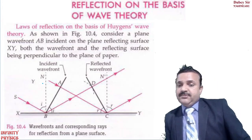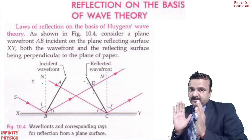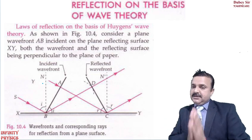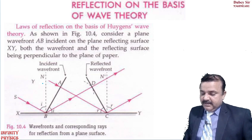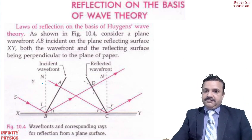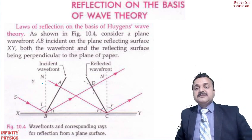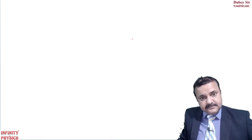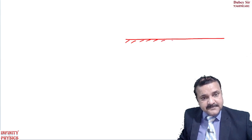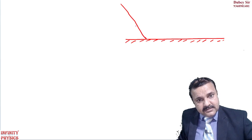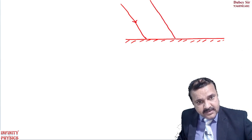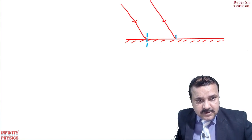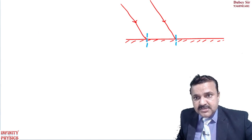Now we prove the law of reflection on the basis of Huygens' wave theory. Since Huygens' principle says light travels in the form of wavefronts, we use this to prove reflection. Suppose this is the reflecting surface. Light is incident on this surface in the form of a wavefront. We draw a normal from the surface.